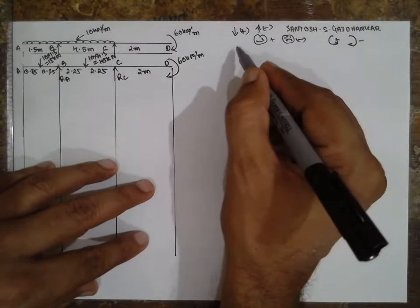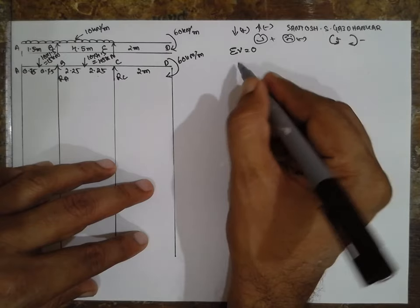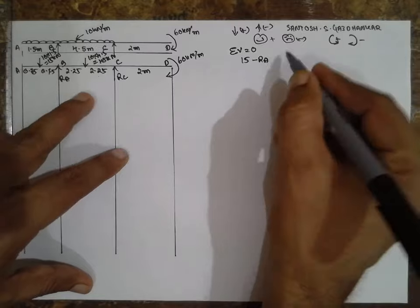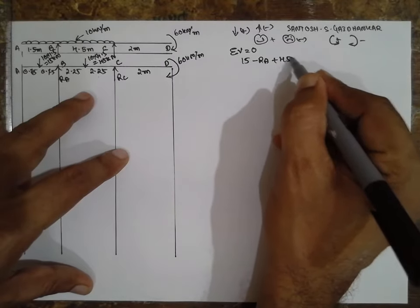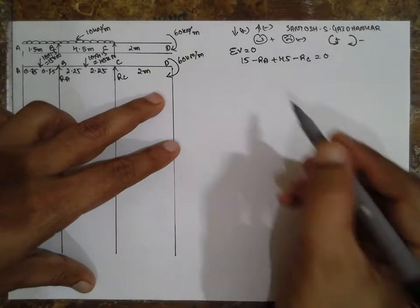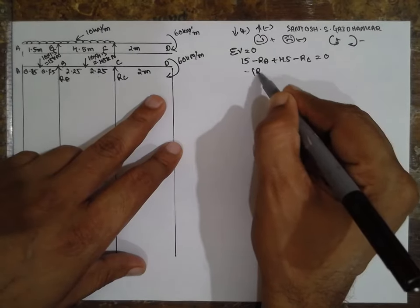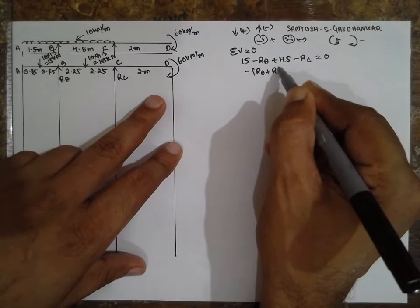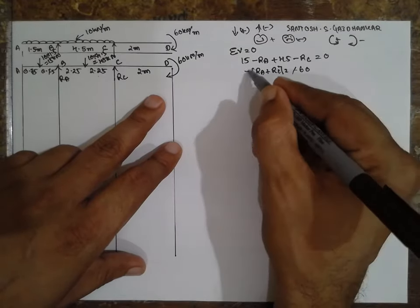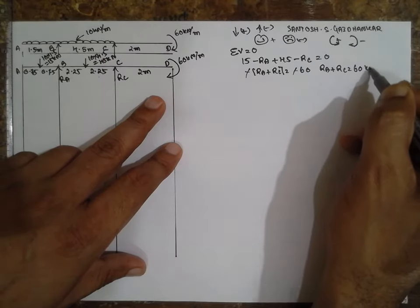Now, sum of the vertical forces to find the reactions equals zero: 15 minus RA plus 45 minus RC equals 0. The couple does not come into picture for the sum of vertical forces. Taking minus common: RA plus RC equals 60 kilonewton. This is Equation 1.